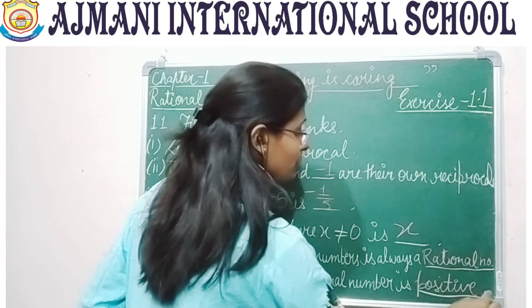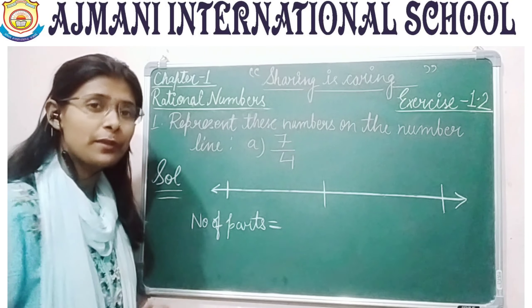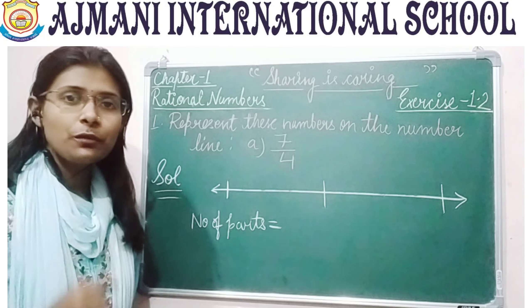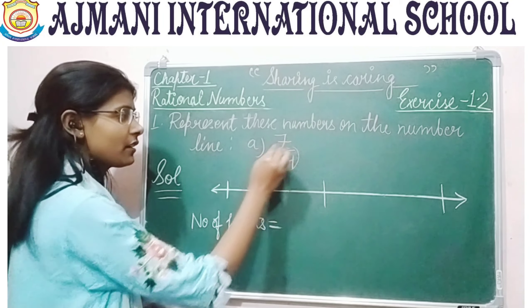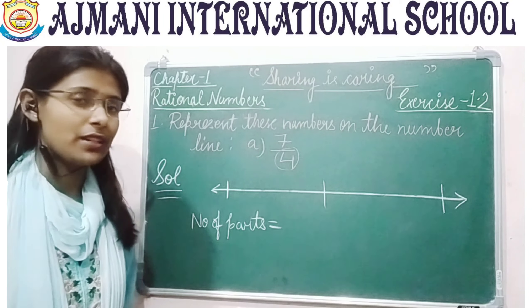I hope this exercise helped you revise all the concepts from this chapter. Now I am going to share the solutions of exercise 1.2. Question number 1 is: represent these numbers on the number line. You have the rational number 7 by 4. First, see the denominator and the relation between the numerator and denominator — 7 is approximately 2 times more than 4, so keep 0, 1, and 2 on your number line.